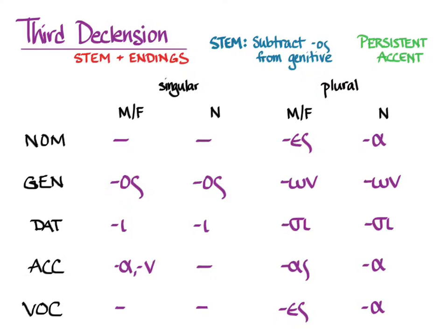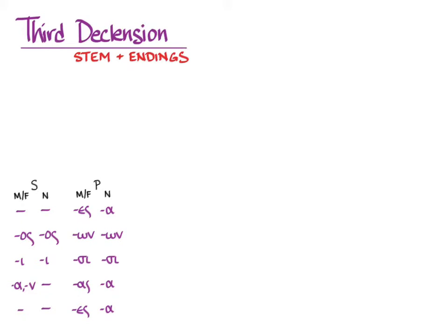Greek only has three declensions, but the third declension has some extra varieties that you need to be able to handle. The first kind we're going to address here are the type μήτηρ, μητρός, ἡ, with the variation ἀνήρ, ἀνδρός, ὁ.